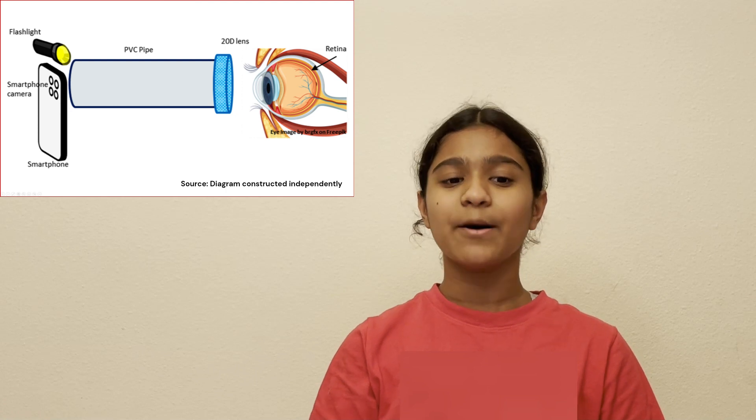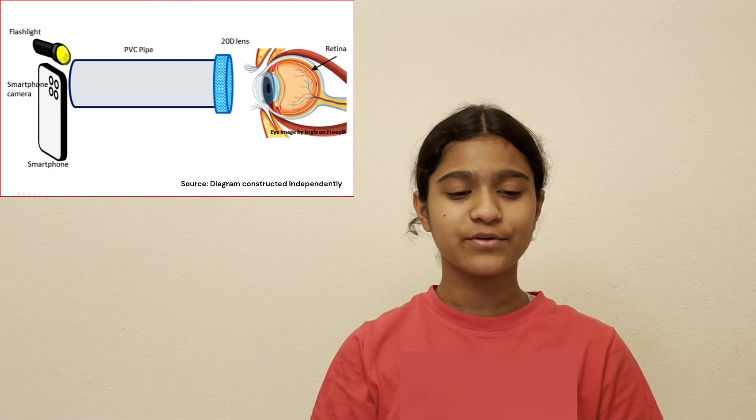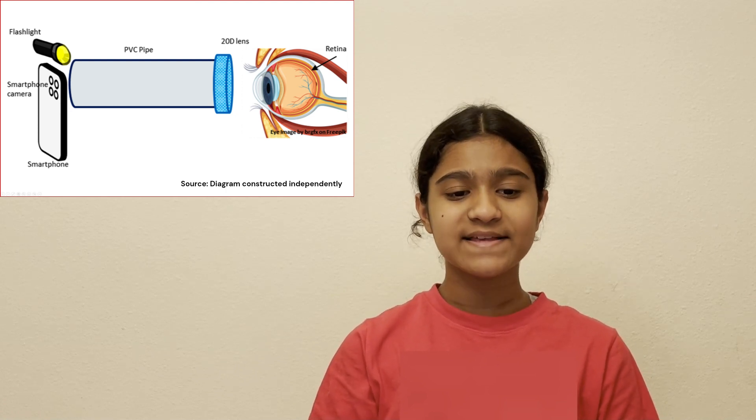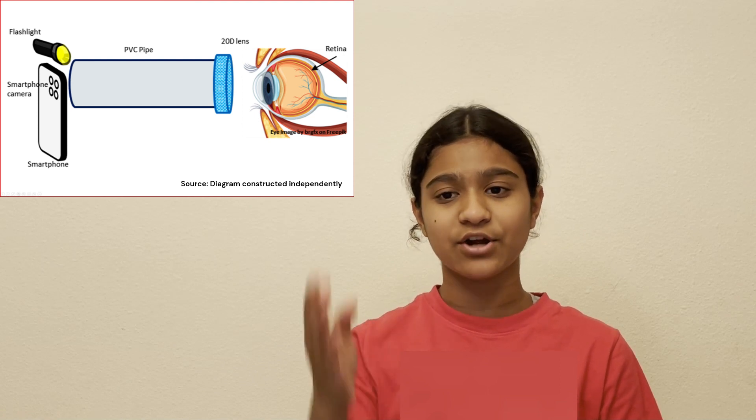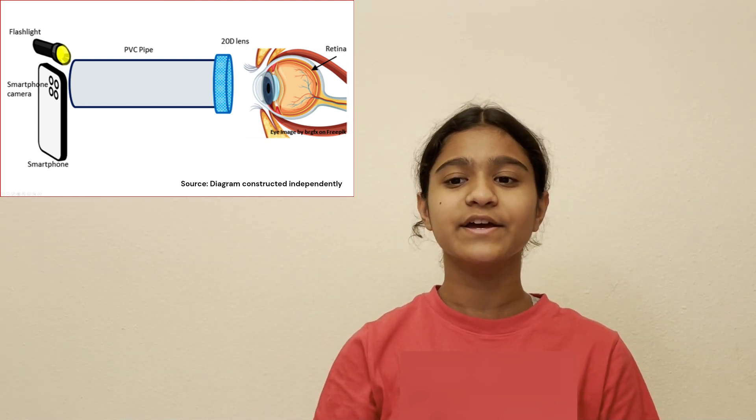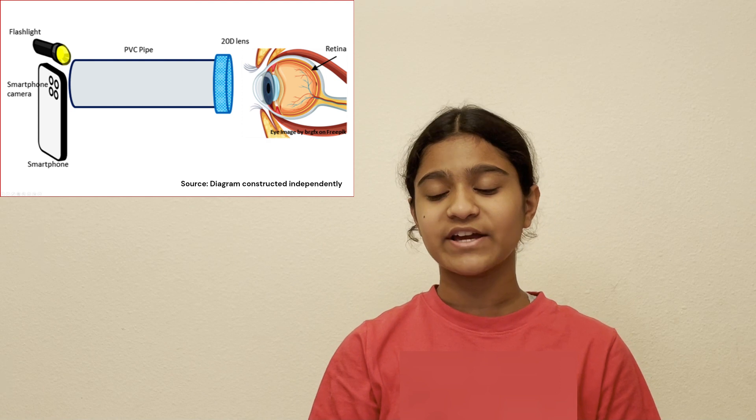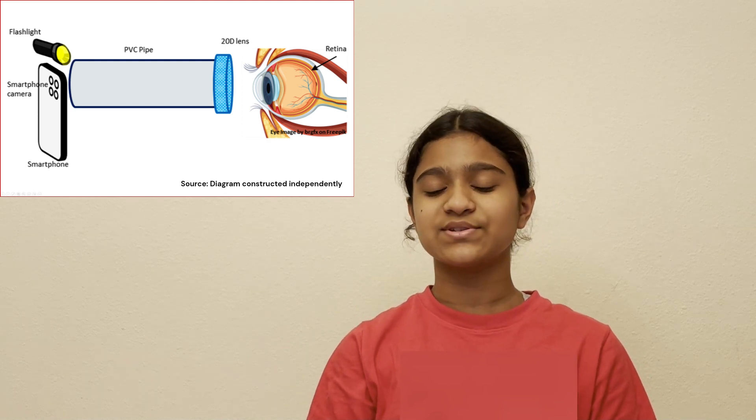So how would you get retinal images to use in my app? Well, I built a handheld device using a 20-diopter lens, a PVC pipe, flashlight, and a phone. A 20-diopter lens is the best lens because it gives incredible clarity across the fundus or the back of the eye. The pipe was used to narrow all of the light into a focal point, and the light was used to dilate the pupils.